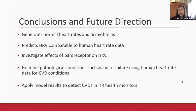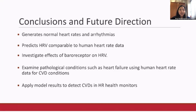Some conclusions: by using a systems representation of the cardiovascular system, we were able to include physiological function in our model and generate both normal heart rates and arrhythmias. Our model predicts heart rate variability comparable to healthy human heart rate data. Future directions include investigating the effects of the baroreceptor system on heart rate variability, comparing our model to human heart rate data for cardiovascular disease conditions such as heart failure, and applying the model's results of abnormal heart rate patterns to cardiovascular disease detection methods in health monitoring devices that measure heart rate. With this, cardiovascular disease and risk can be detected earlier so that precautionary measures and therapeutic interventions can be implemented to benefit the cardiovascular health of patients.